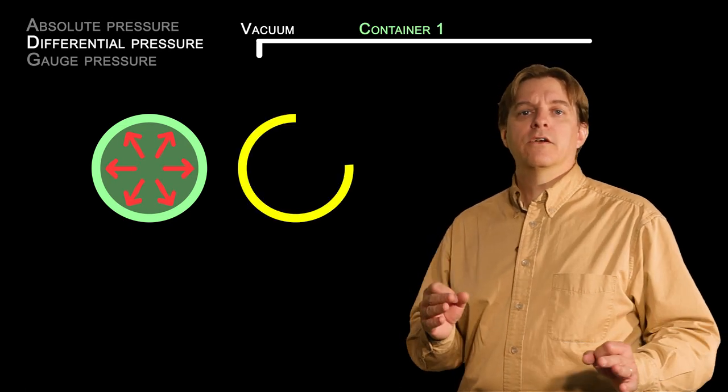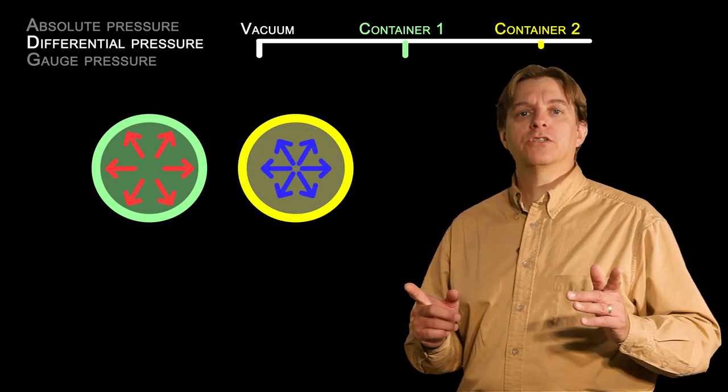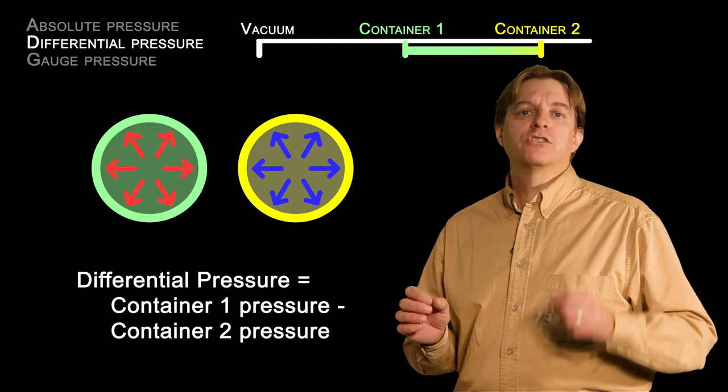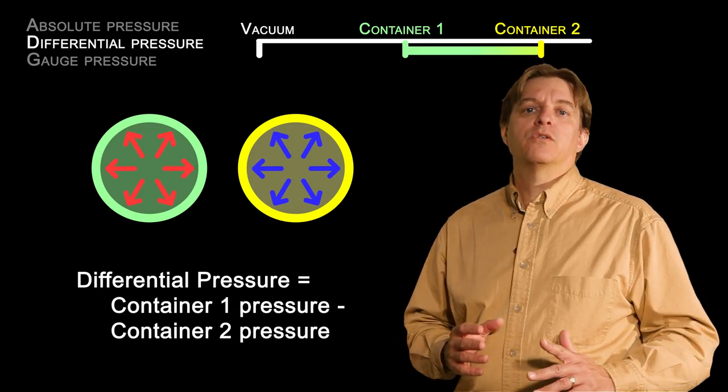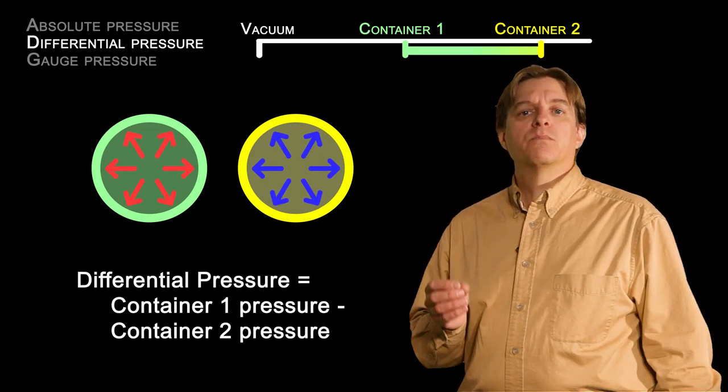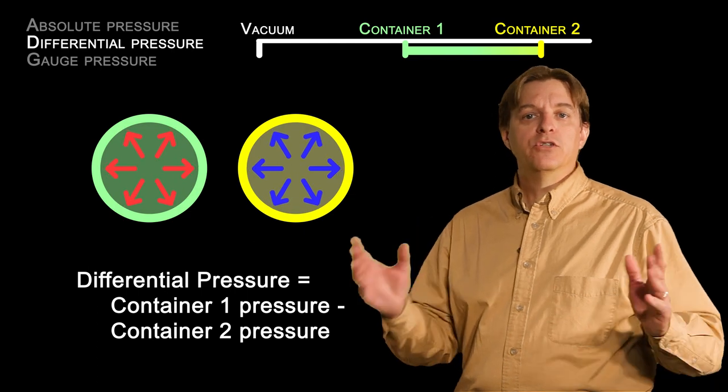Now let's put another container inside that vacuum with a different pressure. If we subtract one pressure from the other, we get the differential pressure. Differential pressure is the pressure difference between two systems.